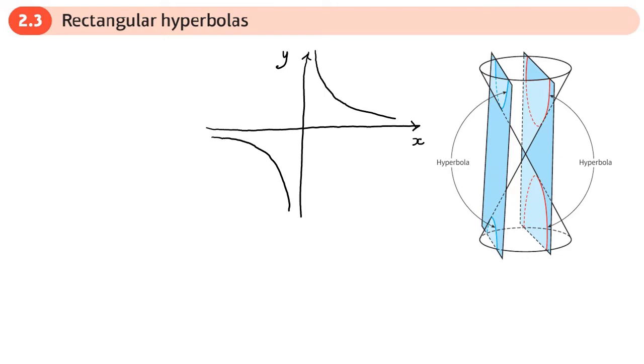We can also talk about a general point on the graph. Its equation in Cartesian form is xy equals c squared. I suppose you could also have y equals c squared over x, but we tend to write it as xy equals c squared. That's the form we'll be used to seeing it in.